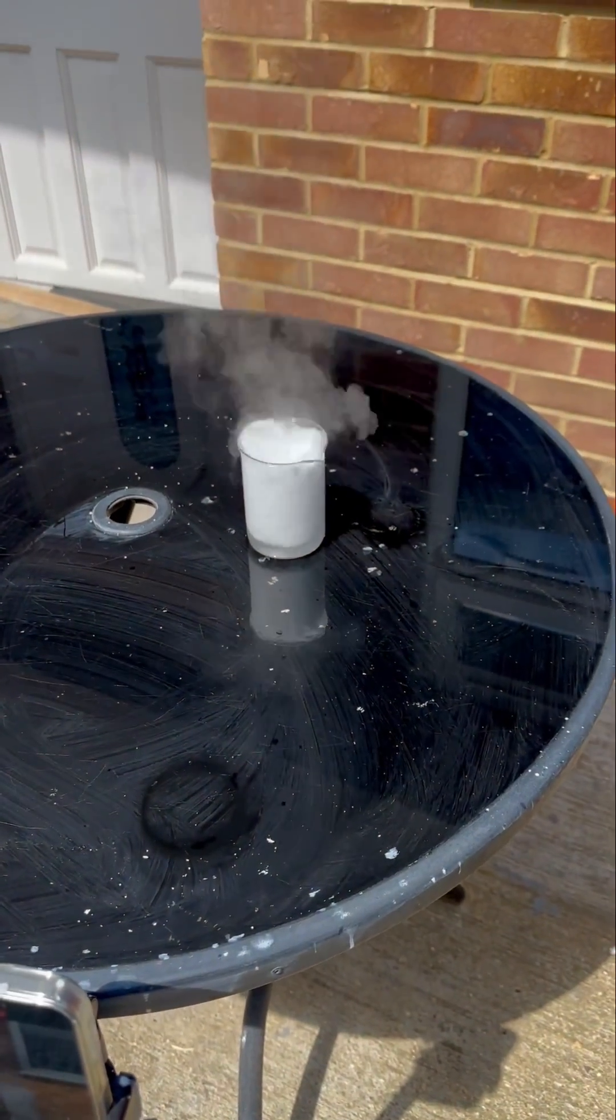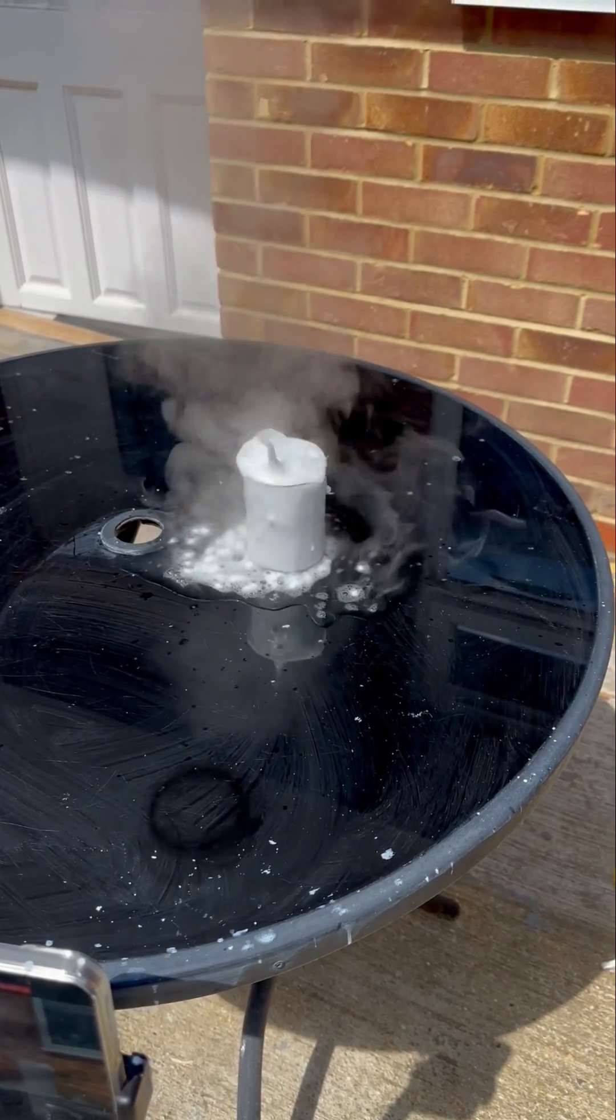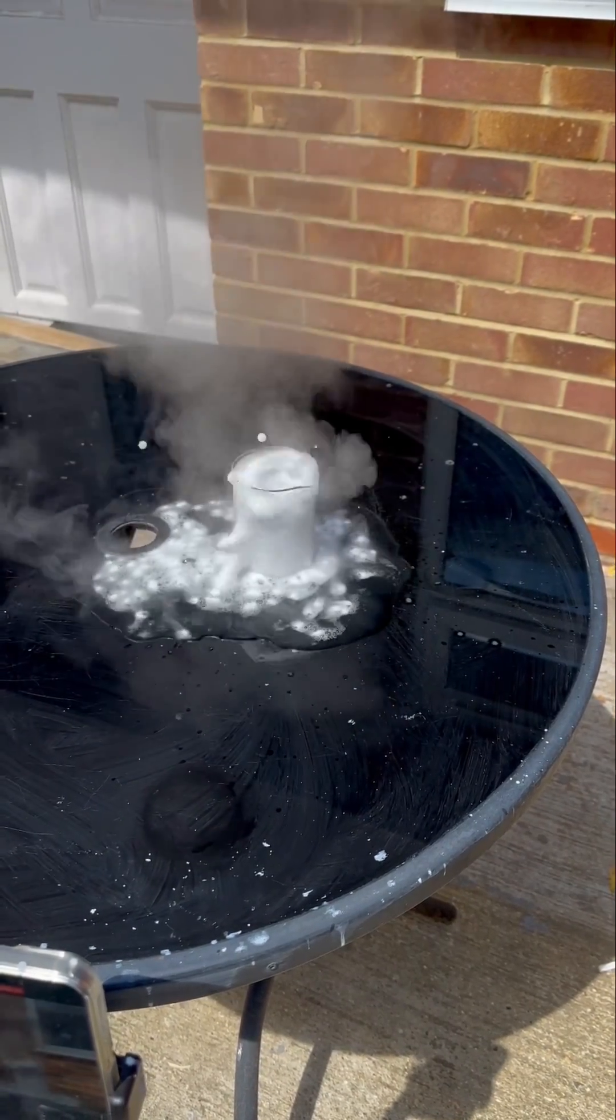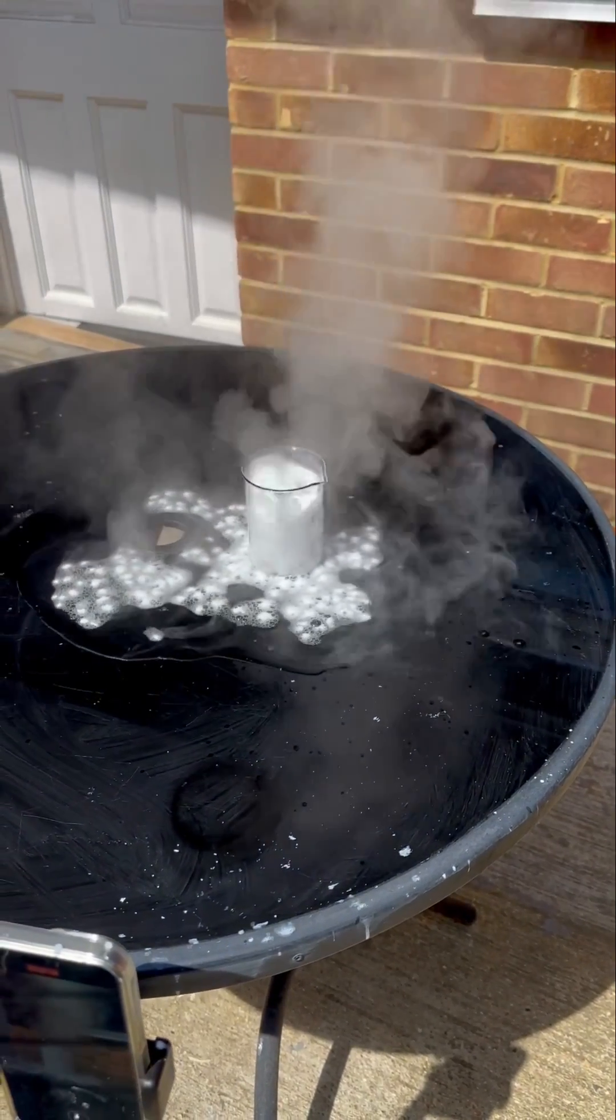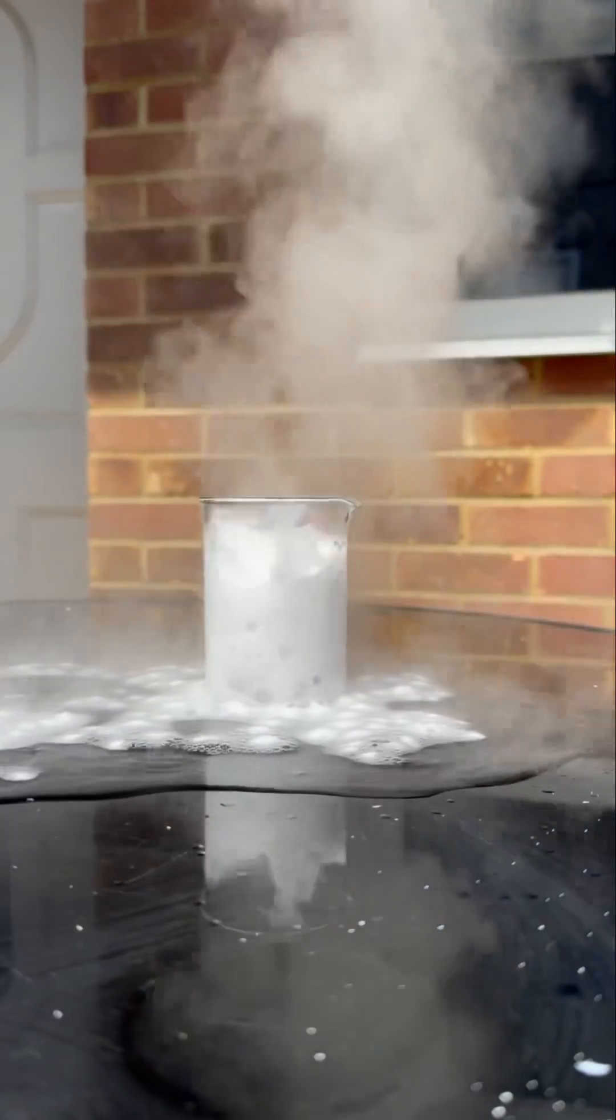So obviously whenever you put a metal into an acid, it always makes a salt plus hydrogen gas. So obviously because it's hydrochloric acid, the calcium combined with the chlorine and it formed calcium chloride - that's the salt fam.